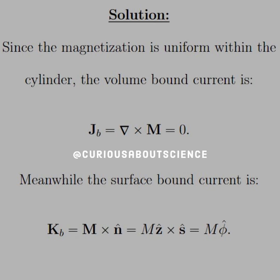Since the magnetization is uniform within the cylinder, the volume bound current is zero, because the curl of a constant — or the derivative of a constant — is zero. That's nice.